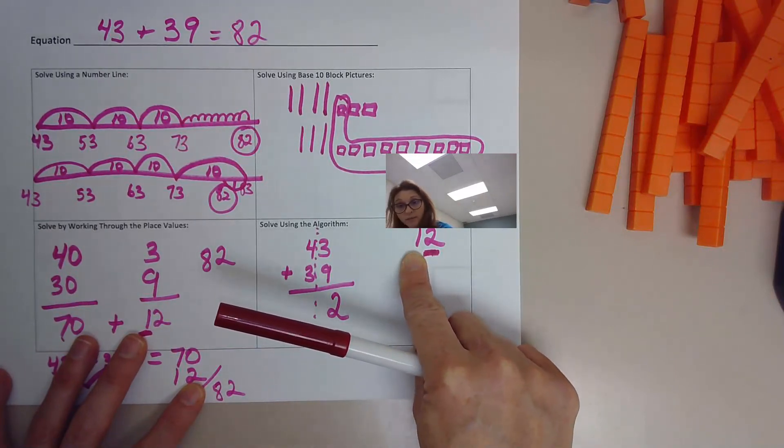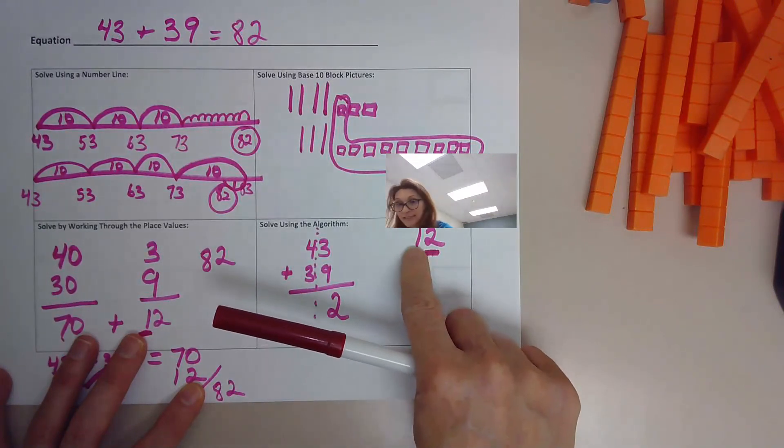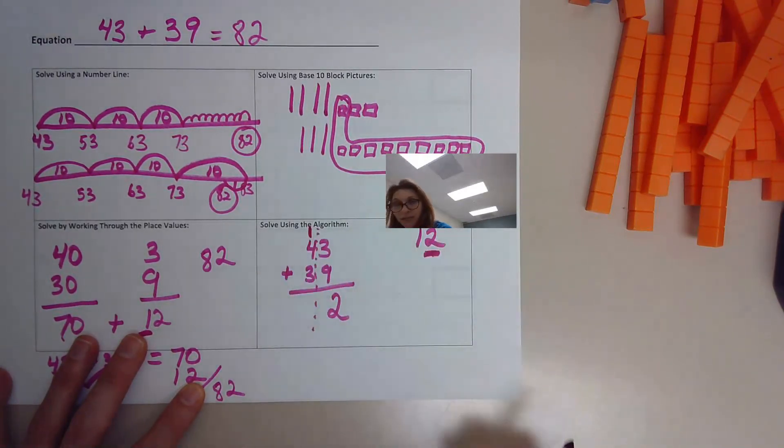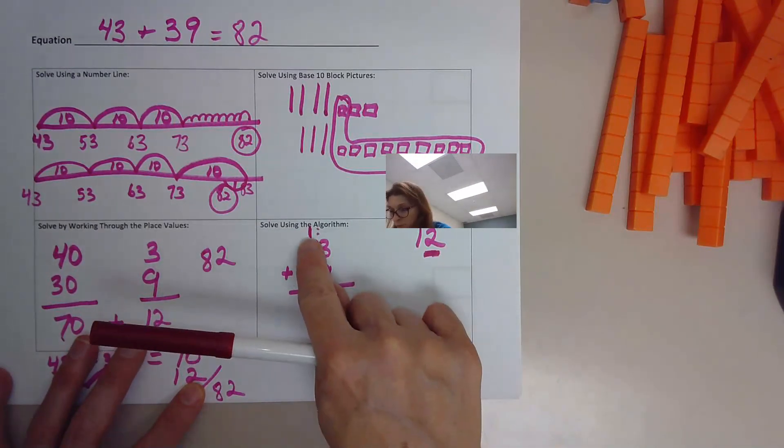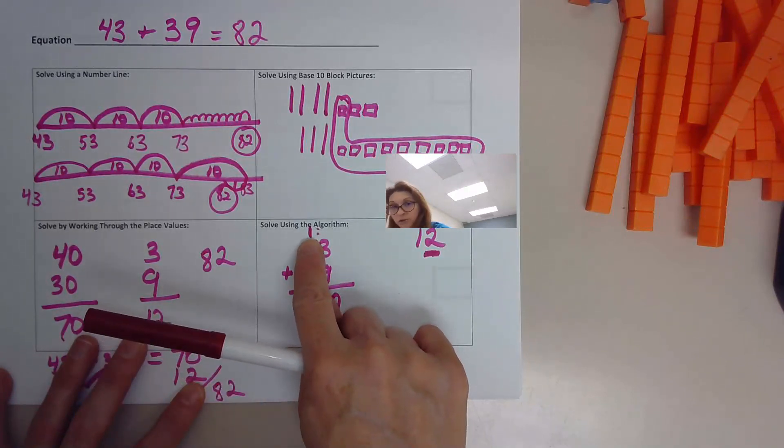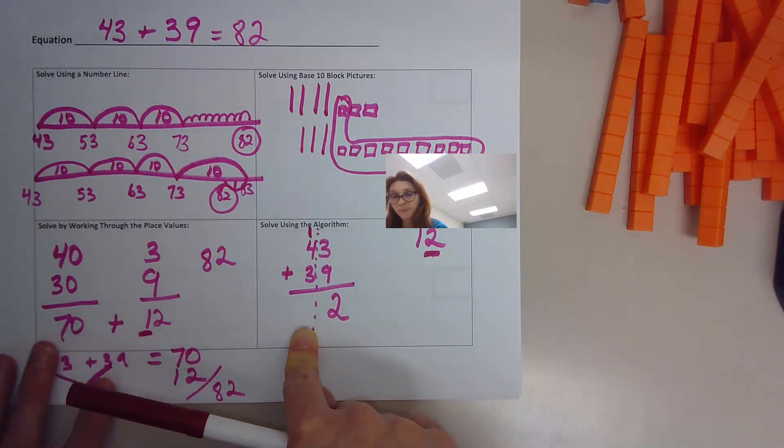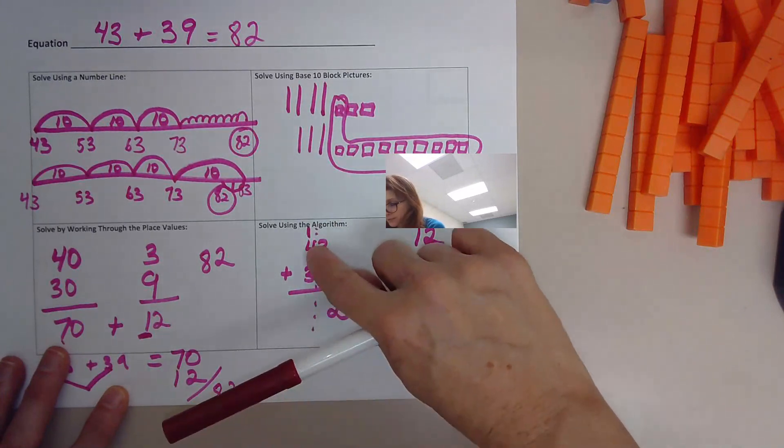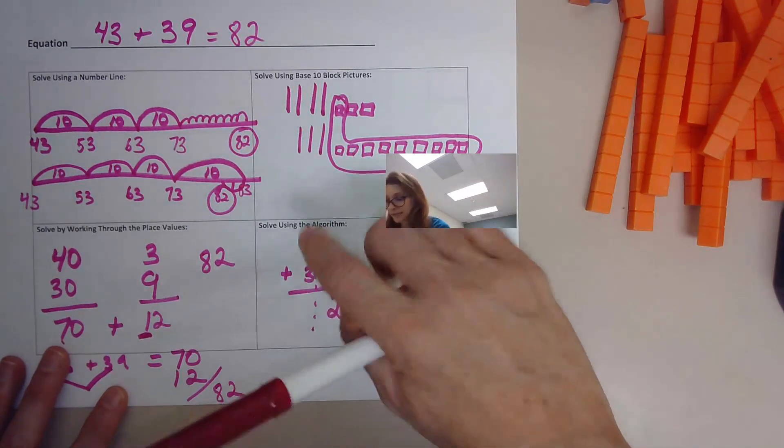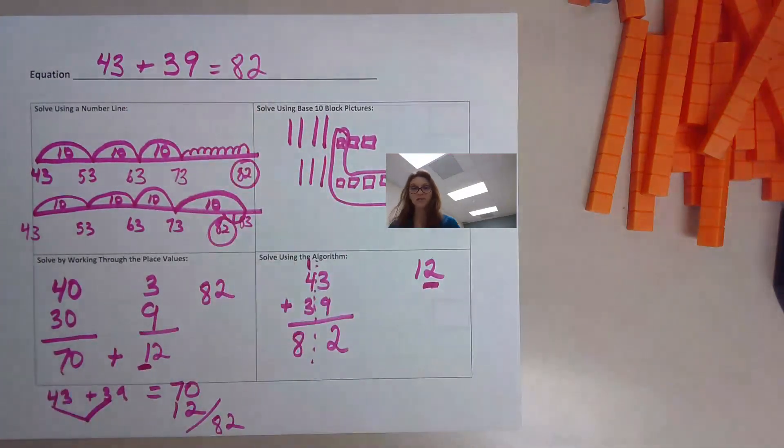That goes in the ones place value. This digit here, this one is actually worth 10 because the number 12 is 10 plus two more. So then we put it over here to show that this one, there's one more group of 10. So you put down the two, you carry your group of 10 over here into the tens place value where it belongs. Now we're going to add these all up. Four plus one is five plus three more is six, seven, eight. And we look at our answer 82, which is what we got to begin with.